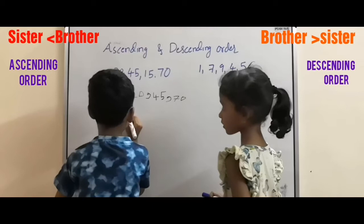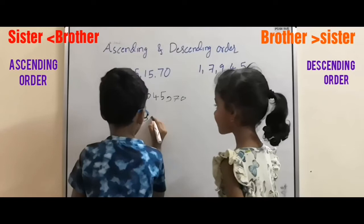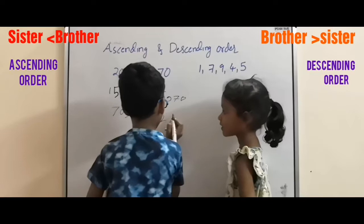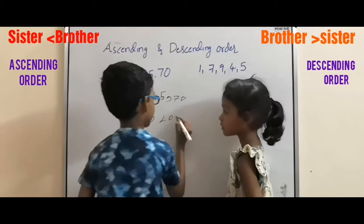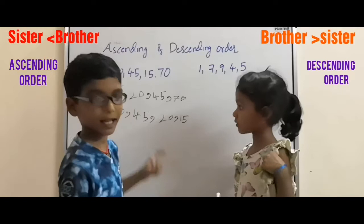So descending order is: 70, then 45 will come, then 20 will come, then 15 will come. Like this. Very good.